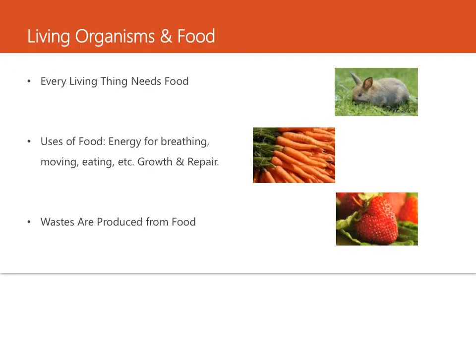Let's talk about living organisms and food. Food contains stored energy that can be released by an animal's body when the animal eats it. So anything an animal eats or drinks that gives it energy is food for that animal. Animals have to eat the right food to get energy from it. For example, wood is not very nutritious for humans, but it is nutritious for termites and other types of insects. Plants can make their own food from sunlight, water, and carbon dioxide gas — that process is called photosynthesis.